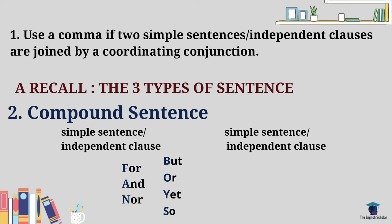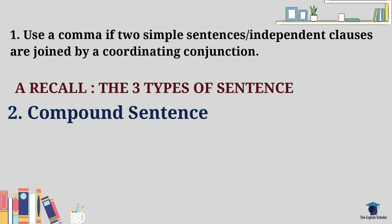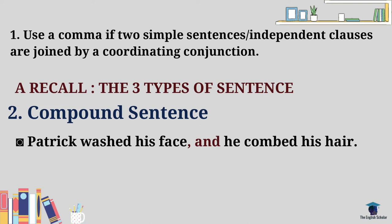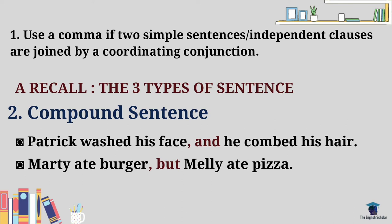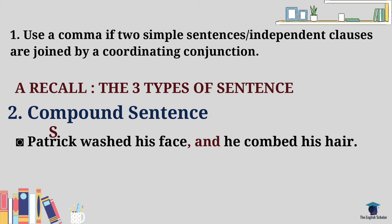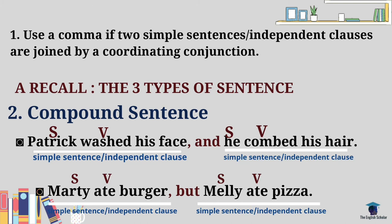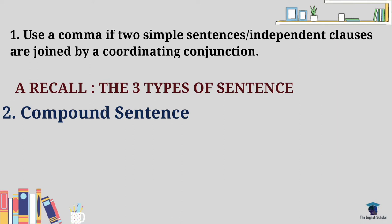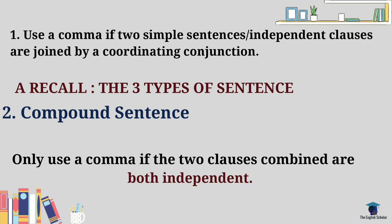You can use FANBOYS to easily remember the seven coordinating conjunctions. For example: 'Patrick washed his face, and he combed his hair.' 'Marty ate a burger, but Amelie ate pizza.' After the first independent clause, we put a comma first, then the coordinating conjunction. Always remember: we only use a comma if the two clauses combined are both independent clauses.